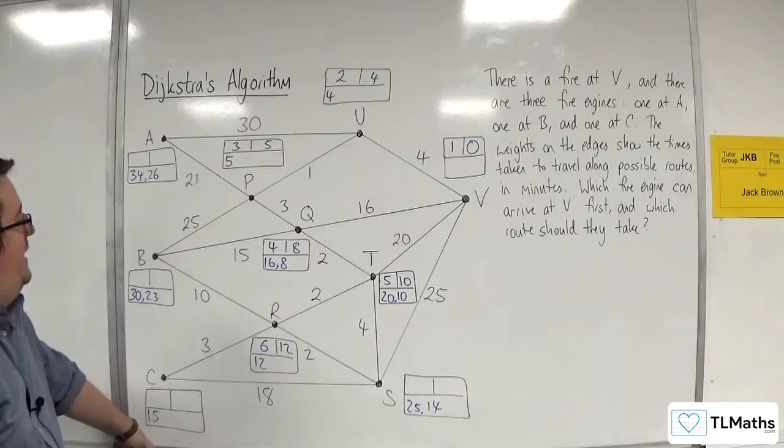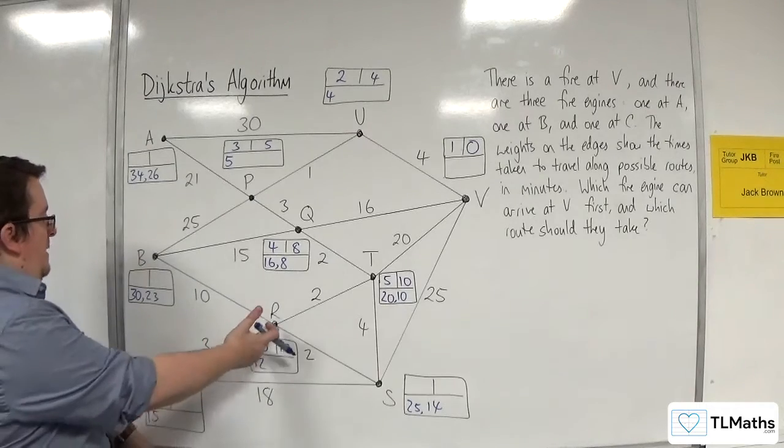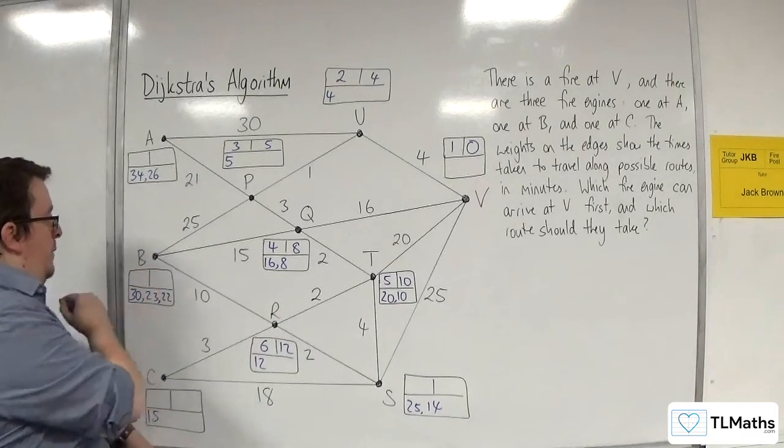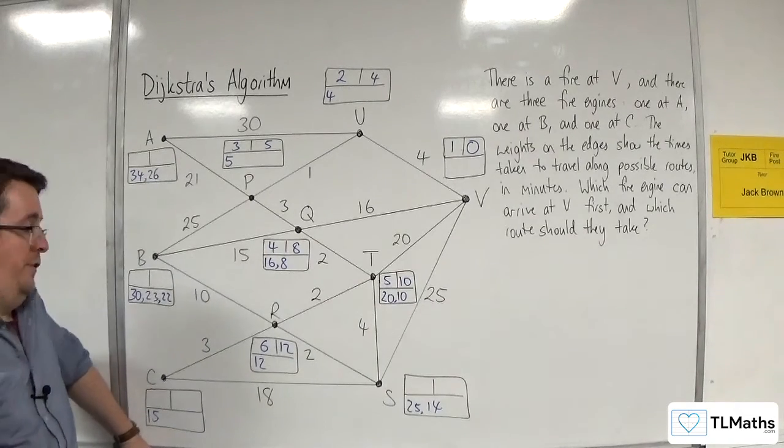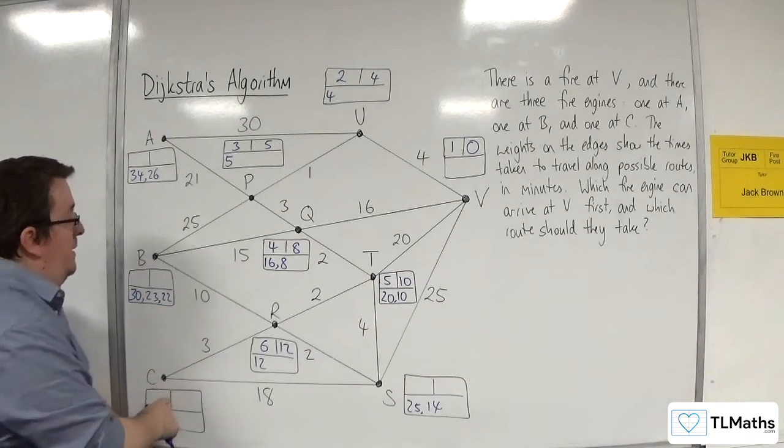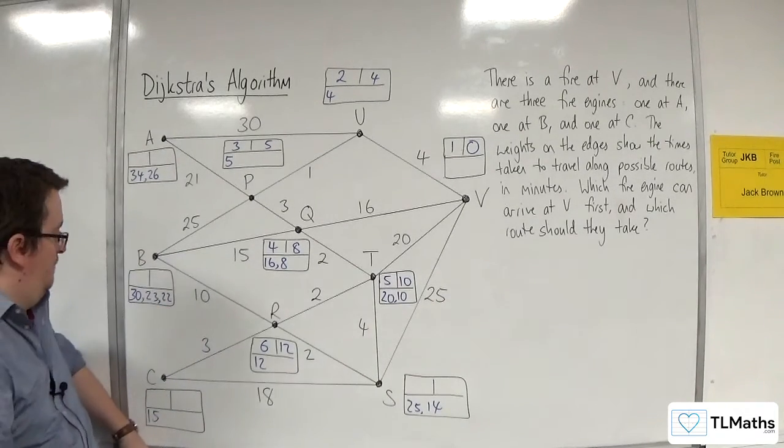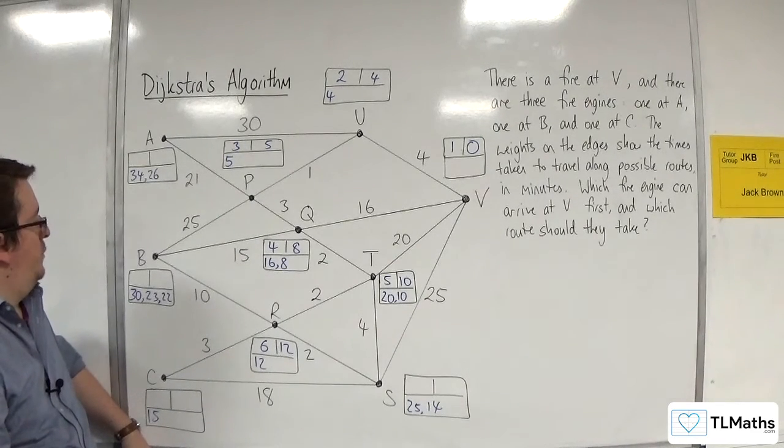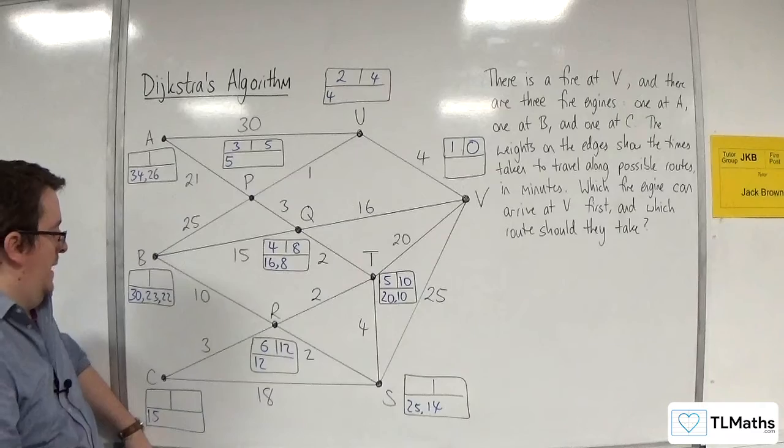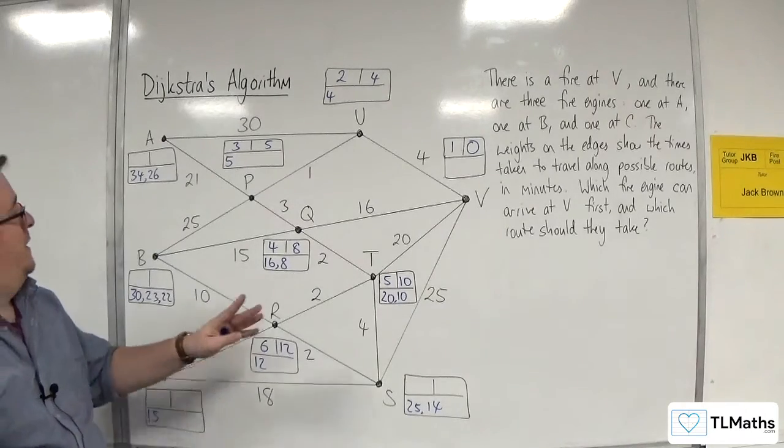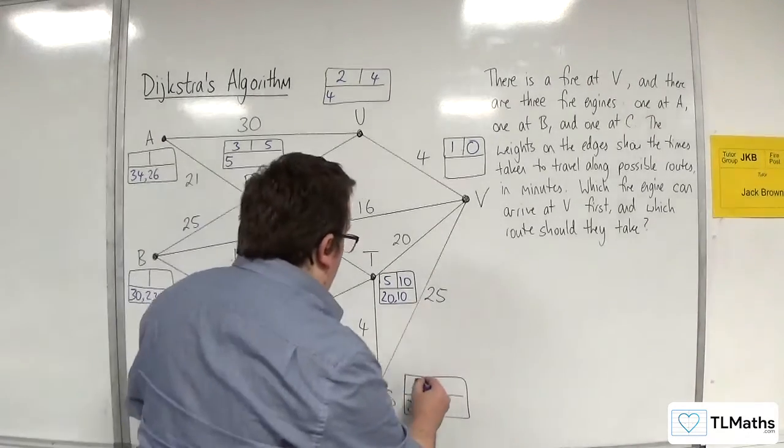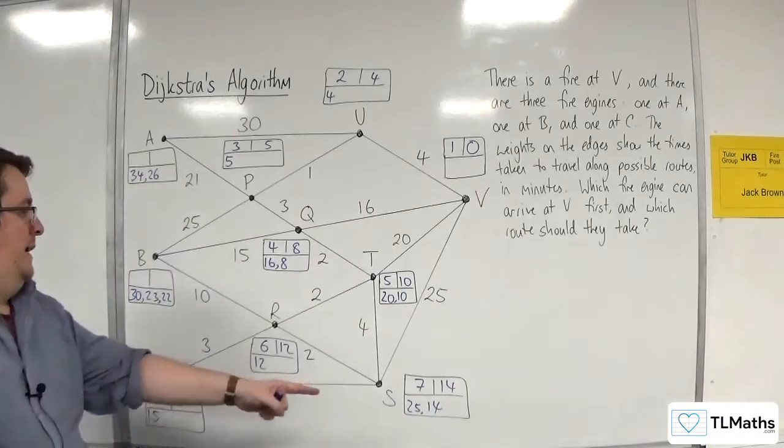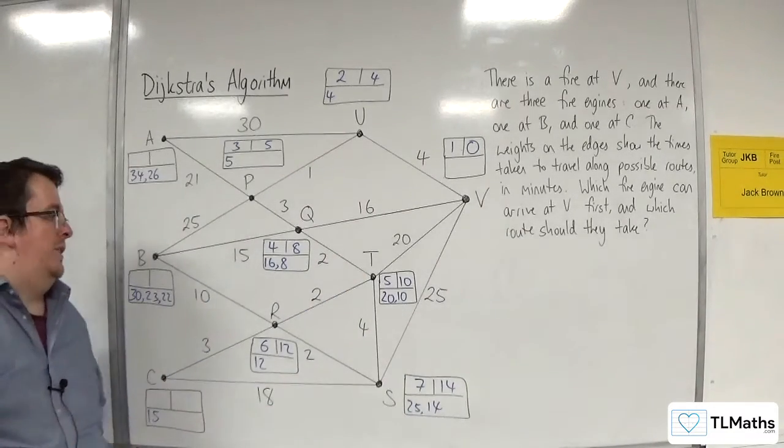And 12 plus 10 is 22, so that's better than 23. Almost missed that one out. So clearly we've identified that C will be the first one that can get there. But we've got to keep going. I've got to complete it. So next shortest to consider will be the 14 over here. So that's 7 and 14. 14 plus 18 is 32, which isn't better than 15, so I don't write anything down.